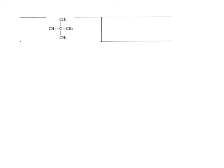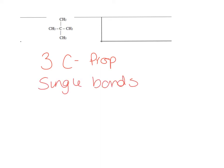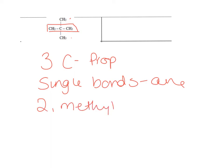Next one: again, looking for the longest straight chain. No matter how I rearrange this hydrocarbon, the longest straight chain is 3 — meth, eth, prop. I can see they're all single bonds, so A-N-E. Now, thinking about branches — I have two branches, and they're both on carbon 2. They are both methyl branches, and because I have two, that's represented as 'di'. Putting it all together: 2,2-dimethylpropane.